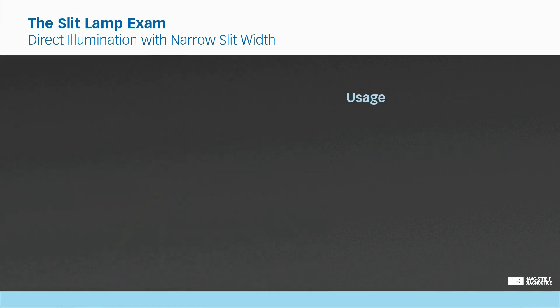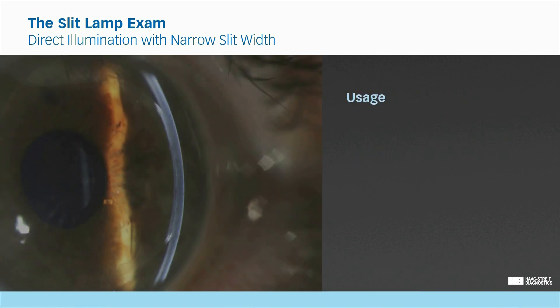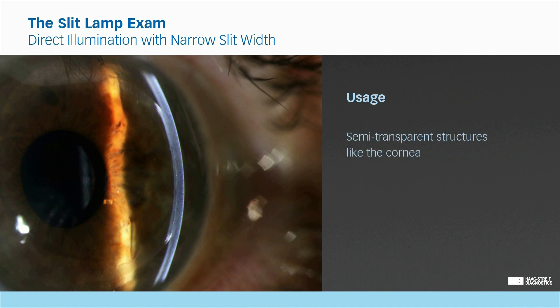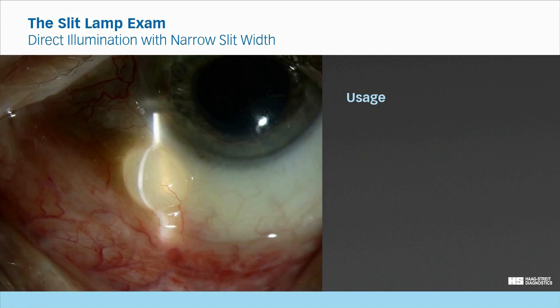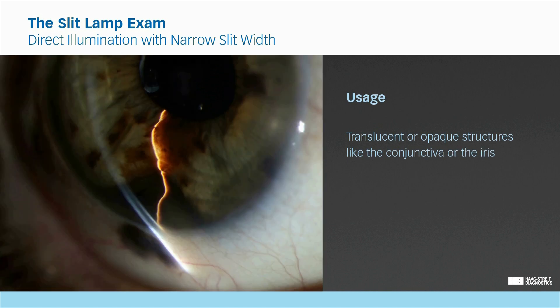Usage. It is used in the examination of semi-transparent structures like the cornea and the lens, where it creates an optical section. However, the fine slit illumination can also be used for evaluating the height of lumps and bumps in other structures of the eye such as the conjunctiva or the iris.